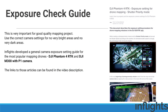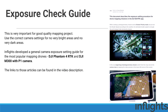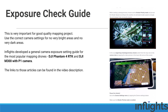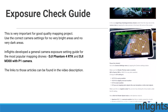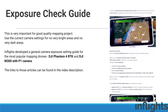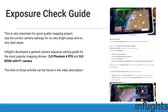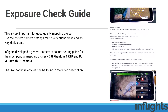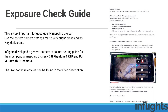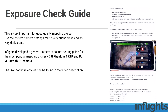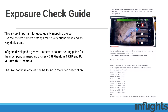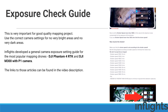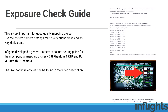Correctly exposed images is another important factor in drone mapping. You want your picture's brightness just right. This means using the correct camera settings to eliminate very bright areas and very dark areas. After extensive testing at inflights, we developed a general camera exposure setting guide for the most popular mapping drones — the DJI Phantom 4 RTK and DJI M300 with P1 camera. The links to those articles can be found in the video description.